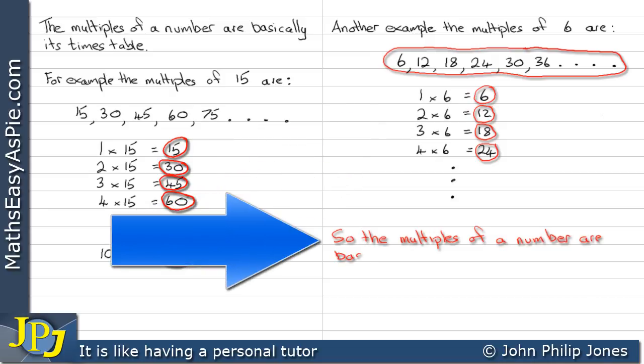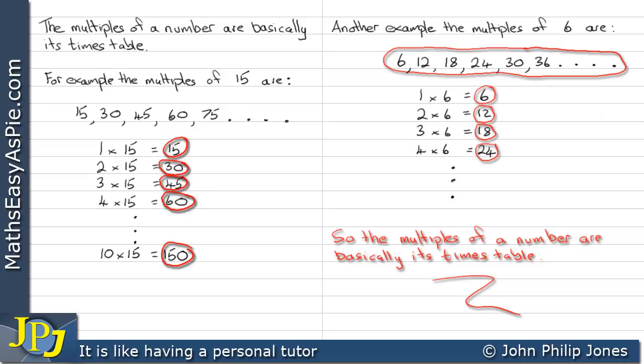So the multiples of a number are basically its times table, as I've already said. And that's it. Nothing more complicated than that.